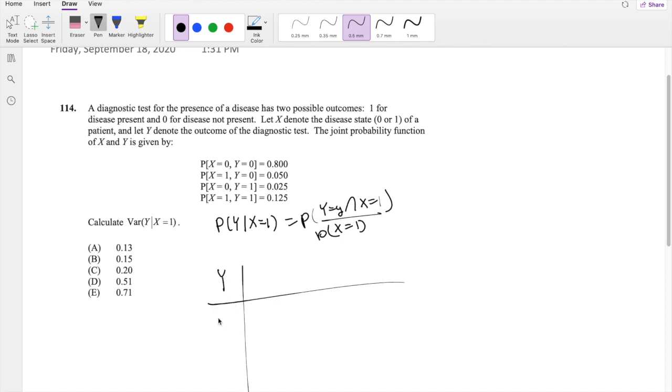What values can Y take? It can only take the value 0 or 1. Let's do the numerator first. What is the probability that Y equals some little y and X equals 1? Well, Y equals 0 and X equals 1 at 0.05 right here. Y equals 1 and X equals 1 at this point right here, 0.125.